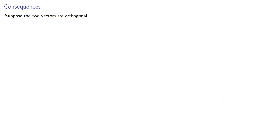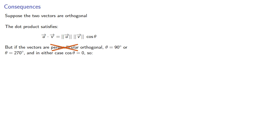Now suppose the two vectors are orthogonal, or we might say perpendicular. Now let's get used to using the phrase orthogonal. The dot product still satisfies that equation, but if the vectors are perpendicular, I mean orthogonal, then our angle is either 90 degrees or 270 degrees, and in either case the cosine of theta is 0.